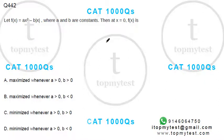Hi, this is a question on algebra and modulus. You can do it using a graph—that's the easiest way. Let's see what we can do. f(x) equals ax² minus b times modulus of x, where a and b are constants. Then at x equals 0, what happens to f(x)?